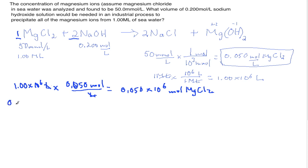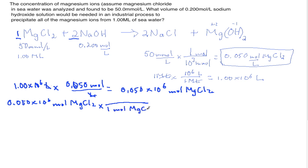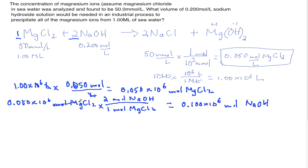We take 0.050 × 10⁶ moles of magnesium chloride and multiply by the mole ratio: 2 moles of sodium hydroxide per 1 mole of magnesium chloride. The moles of magnesium chloride cancel out, giving us 0.100 × 10⁶ moles of sodium hydroxide.